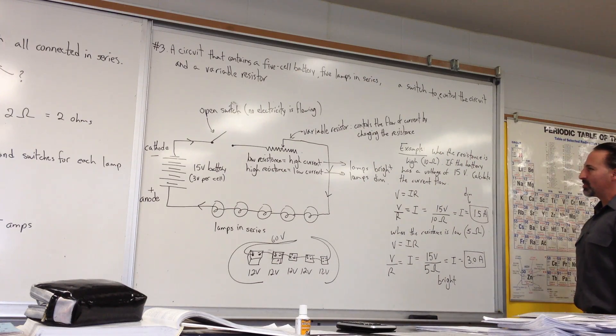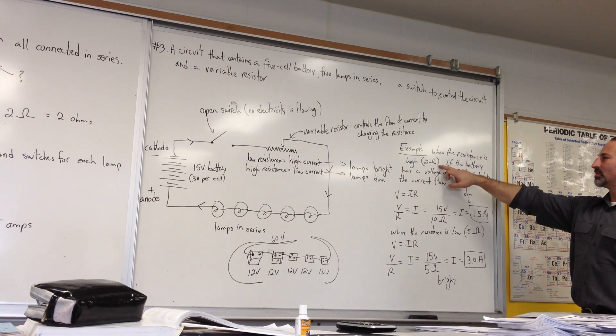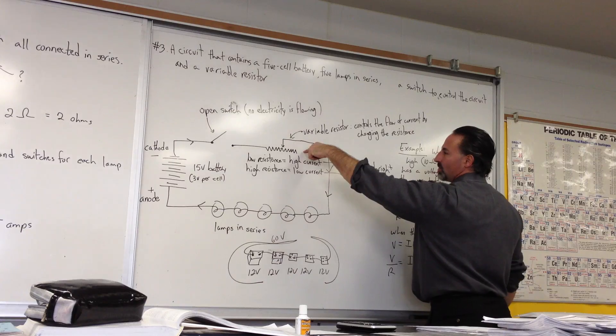Now, I asked, in this hypothetical circuit, I asked, when the resistance is high, say 10 ohms, so if you had it switched up to here, so the electricity has to pass through the whole resistor.